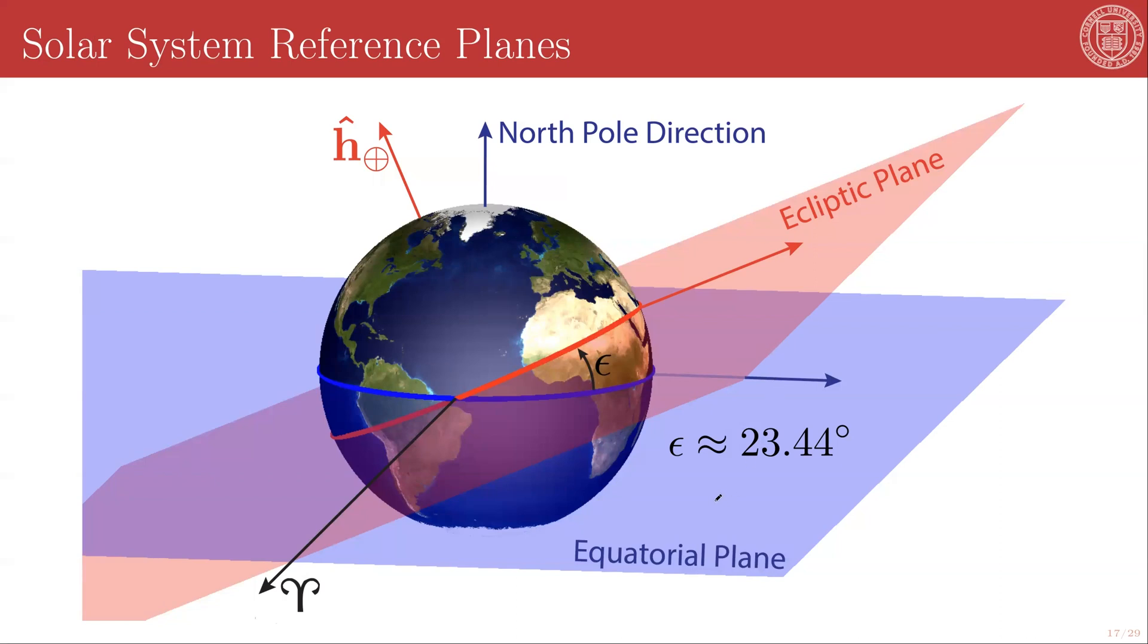Intuitively the equatorial plane makes sense because it is just an extension to infinity of the Earth's equatorial plane. So the plane passing through the equator of the Earth that is orthogonal to the north and south poles is the equatorial plane. The ecliptic plane is the plane of the Earth's orbit and it is rotated from the equatorial plane by this argument epsilon known as the obliquity of the ecliptic which has a value of approximately 23.44 degrees.